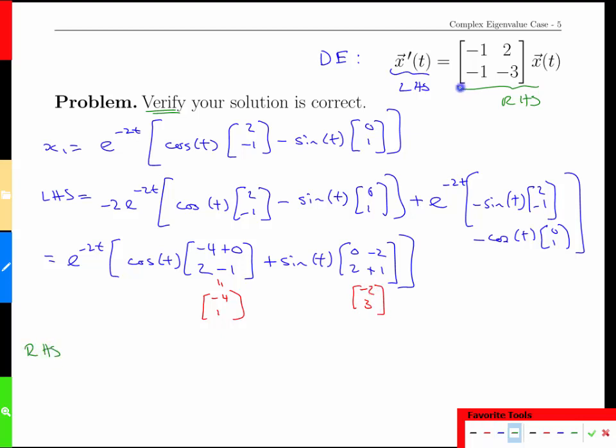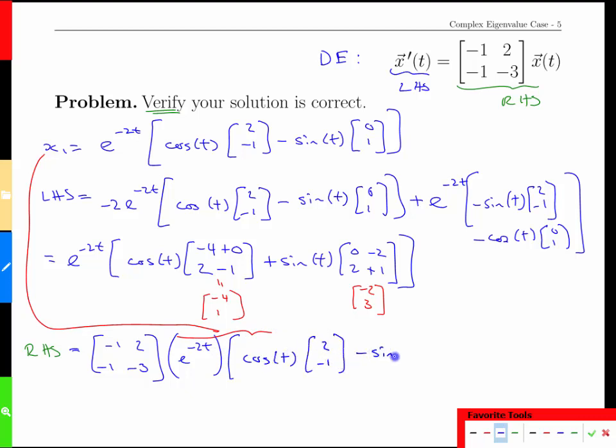What does our right hand side equal? So that's this term over here. Our right hand side is the matrix [-1, 2; -1, -3] times x, which is e^(-2t) (common factor) times (this is our solution again, so this is x₁ coming in here and being imposed or being used as a value). We multiply that simply by x as it is: [2; -1] - sin(t)[0; 1], there we go. And what does that equal? Well we get e^(-2t) out front, check.